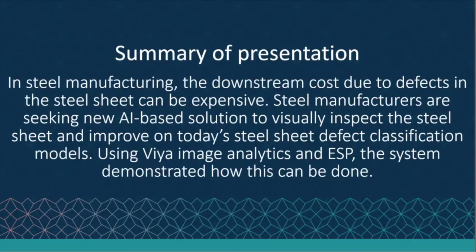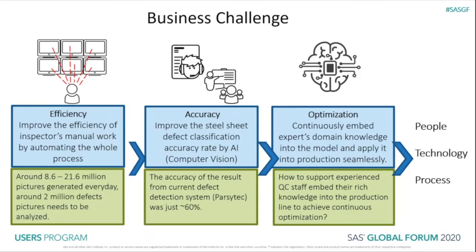In steel manufacturing, the downstream cost due to defects in the steel sheet can be expensive. Steel manufacturers are seeking new AI-based solutions to visually inspect the steel sheet and improve today's steel sheet defect classification models. Using VIA Image Analytics and ESP, the system demonstrated how this can be done. The idea for our system came from a POC for one of the largest steel companies in the world.